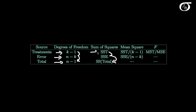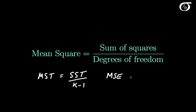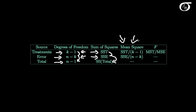How large a sum of squares is depends on the degrees of freedom. It is a sum of squares — the greater the number of groups, say, the greater the sum of squares treatment would tend to be. And we take that into account for our mean square. In statistics, a mean square is simply the sum of squares divided by the degrees of freedom. So our mean square treatment is simply going to be our sum of squares treatment over the degrees of freedom for treatment, which is k minus 1. And our mean square error is simply going to be our sum of squares error divided by the degrees of freedom for error, which is n minus k.